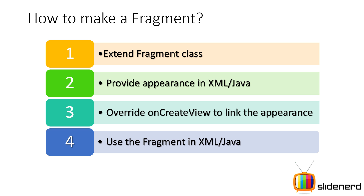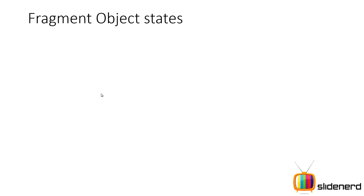Step four: use the fragment in XML and Java. This is probably the only place where Java is the preferred approach compared to XML. The reason is you create fragments dynamically at runtime in Java and perform the essential swapping. But if you use the fragment in XML, it is statically bound to the user interface. We will see both static and dynamic creation of fragments and the different issues involved with them in the upcoming videos.